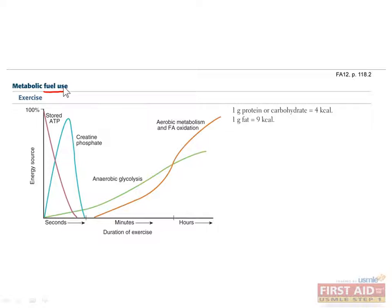We've talked about many different types of fuel use, including glucose, fatty acids, and ketone bodies. You may see a question on Step 1 which asks which molecular fuel source is used in certain types of exercise, the fasted state, the fed state, or in starvation. This figure can give you an idea of which fuel sources are used in which situations, and how long they can last.